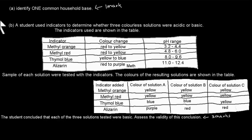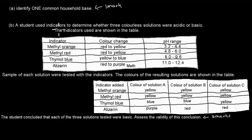There are two parts to this question. The first one is to identify one common household substance — that's for one mark. Part B: a student used indicators to determine whether three colorless solutions were acidic or basic. The indicators used are shown in the table, along with their color changes and pH ranges.